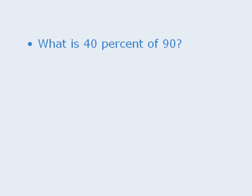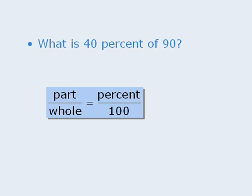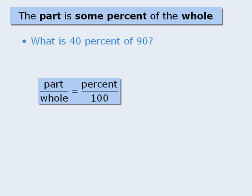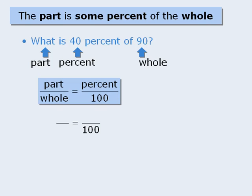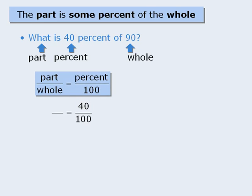To begin, let's answer the question: what is 40% of 90? To apply this formula, we must first identify the part, the whole, and the percent. The part is some percent of the whole. In this question, 40 is the percent. The number we are finding the percent of is the whole, so here the whole is 90. And we are trying to find the part, so let's let x represent the part.